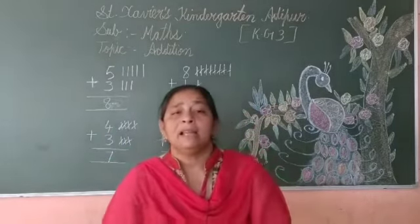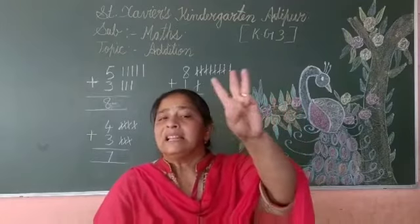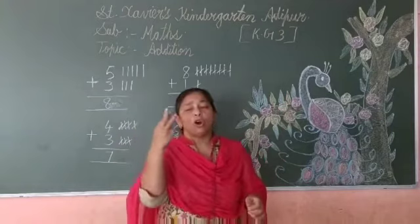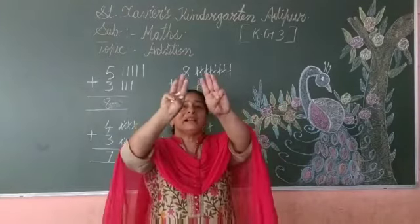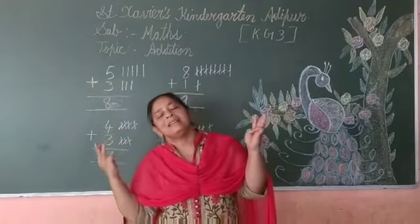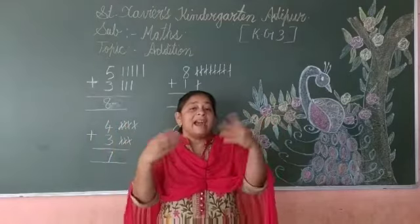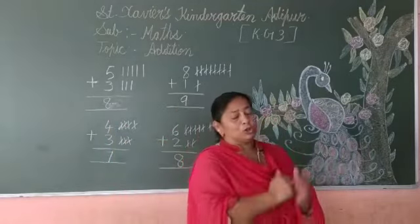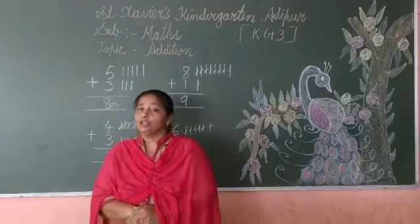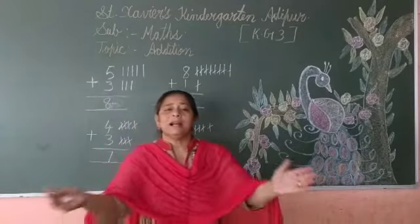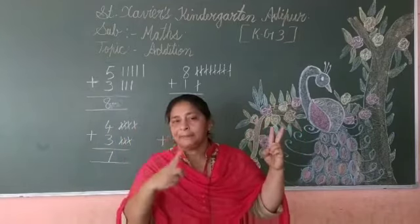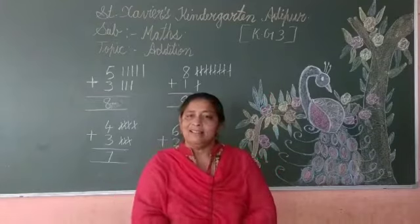Aapki daadhi ne aapko 3 chocolates dhi. Aapki maami ne aapko 3 aur chocolates dhi. Toh kitna hua? Dono mila ke: 1, 2, 3, 4, 5, 6. Toh aapke paas kitna hua? 6. Yaani add karna hai. Aapki bai ne aapko 2 chocolates diya, pappa ne 1 chocolate di, mamie ne 2 chocolate di. Toh woh sab mila ke count karein toh: 2 plus 2 equals 4, aur 1 more equals 5.